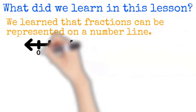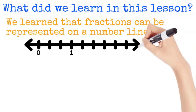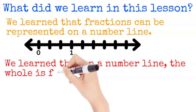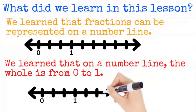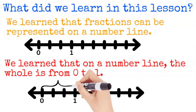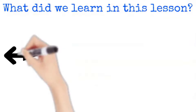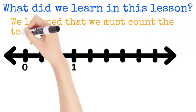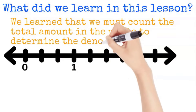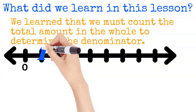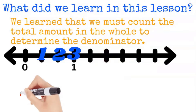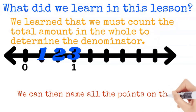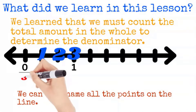So what did we learn in this lesson? We learned that fractions can be represented on a number line. We also learned that the whole is represented from zero to one. And we learned that we must count all the total equal parts in the whole to determine the denominator. In this case, zero, one, two, three — the whole is broken into three equal parts. We can then name all the points on the number line.